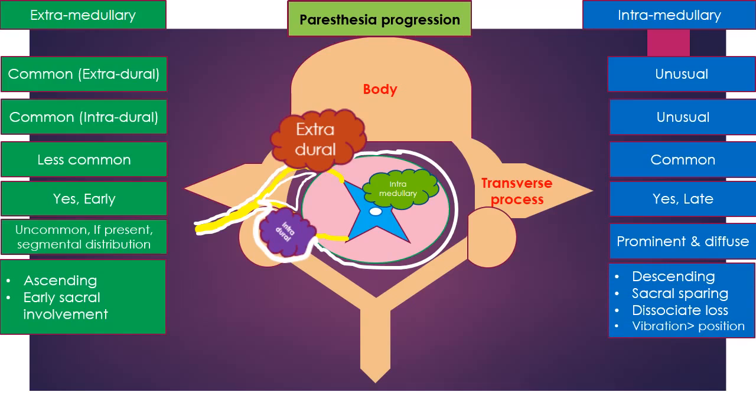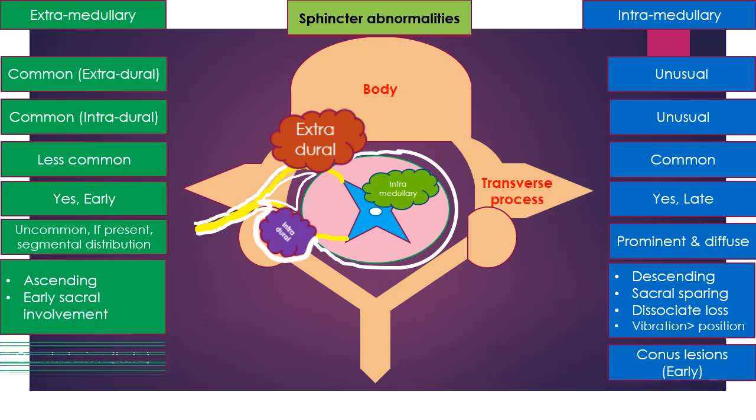Vibration sense is more impaired than position sense in intramedullary lesions. Sphincter abnormalities are common and early with tumors in the conus medullaris and late with space-occupying lesions affecting cauda equina.